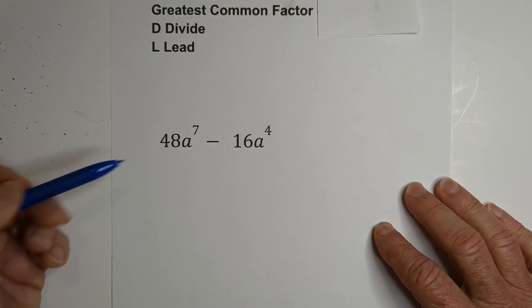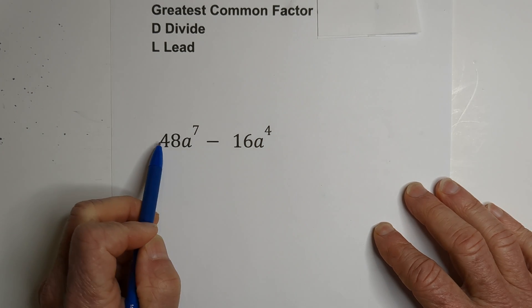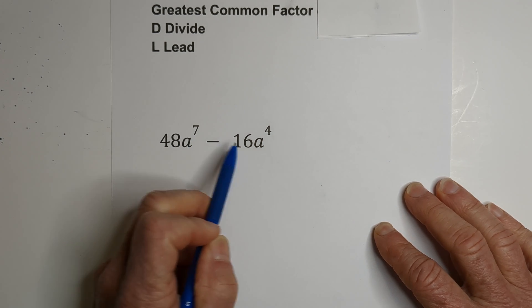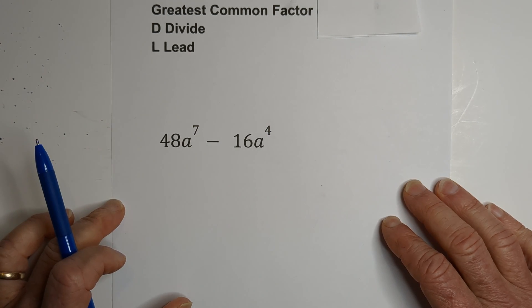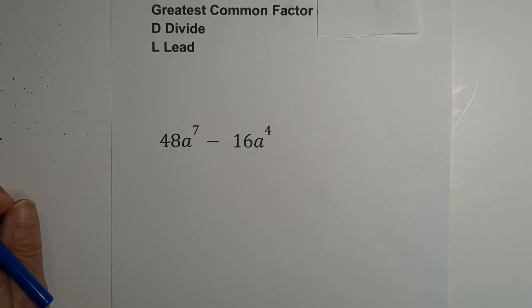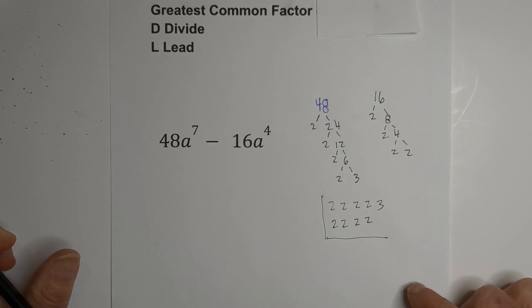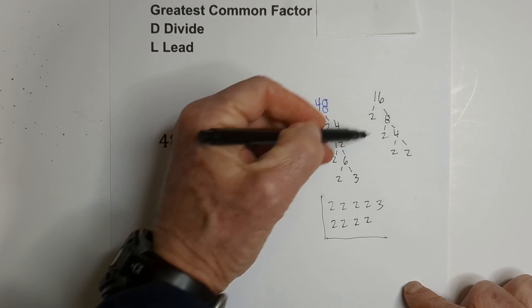First, we need to find the greatest common factor of 48a^7 minus 16a^4. I like to use a factor tree to find the greatest common factor. To speed things along, I went ahead and completed a factor tree.